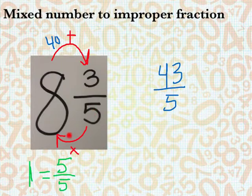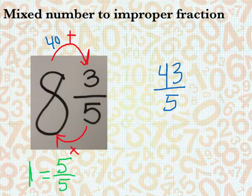So again, that's simply the bottom times the big plus the top over the bottom again. And that is the improper fraction we would want.